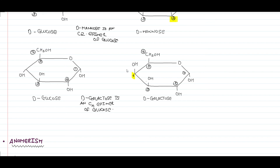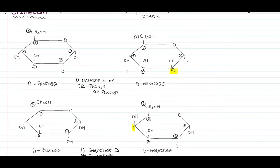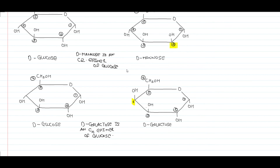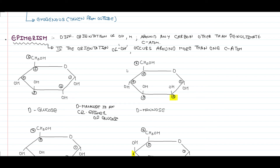Galactose and mannose are not epimers of one another because they differ in orientation around more than one carbon atom. For compounds to be epimers, there must be a difference in orientation of the hydroxyl group around only one carbon atom (other than the penultimate carbon). If the change occurs around more than one carbon atom, they cannot be termed epimers. Therefore, D-galactose and D-mannose can be termed diastereomers of each other.